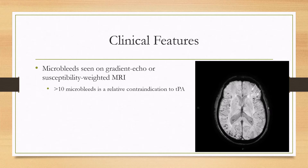Another feature visible on MRI is chronic microbleeds. You can see these on gradient echo or susceptibility weighted MRI, and they appear as small black dots like shown here. Importantly, if you have more than 10 of these microbleeds, that's a relative contraindication to TPA both now and in the future.